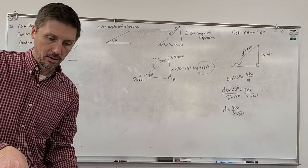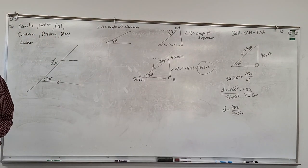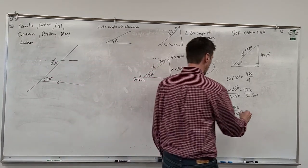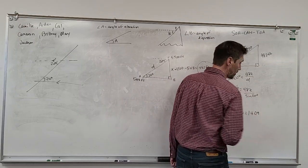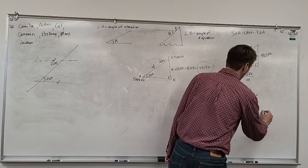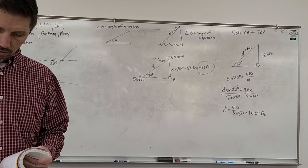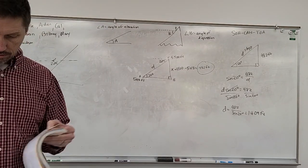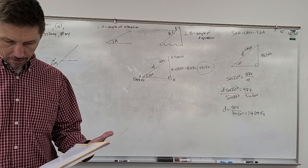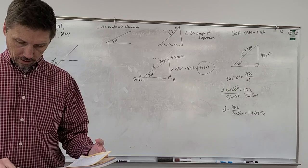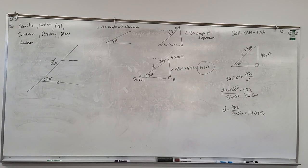Somebody want to do the math? 1,409.3. Let's check the back of the book — verse 39, chapter 9, section 9.5, number 39: 1,409. That's exactly what they got. Did I lose anybody along the way? Does everybody follow? Anybody still stuck on top of the hill?